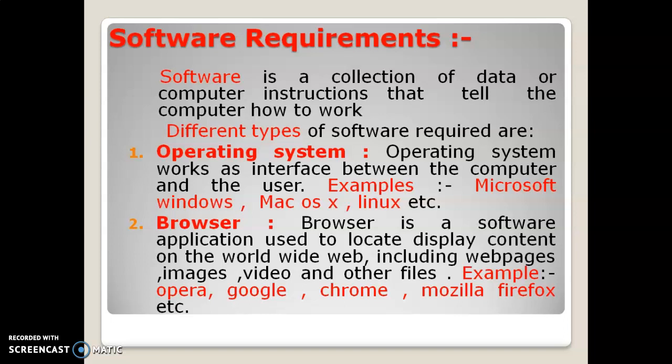Then we need some type of browsers. If you want to search something, or if you want to access the internet, or if you want to access the World Wide Web (WWW), we need another way of using applications. For this we need to use browsers like Mozilla Firefox, Google Chrome, Opera Mini, and others that allow us to access all things over the internet.